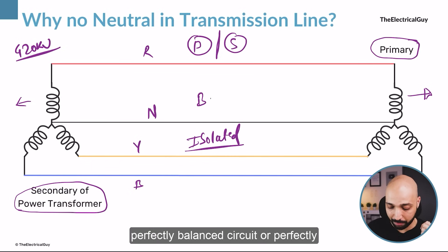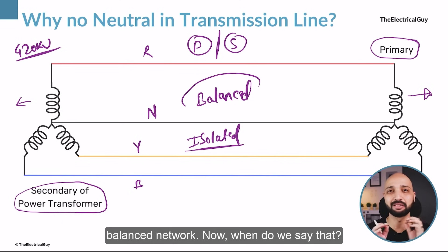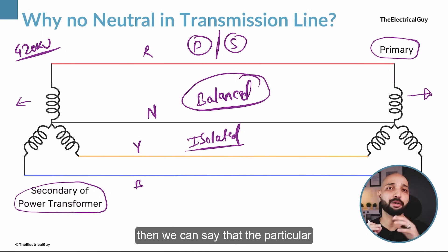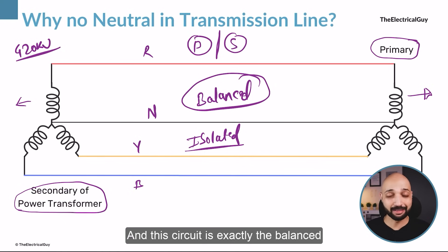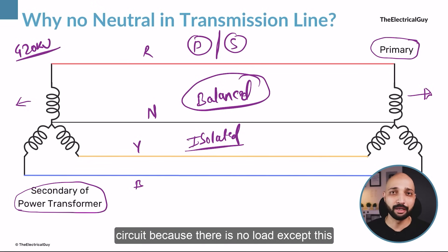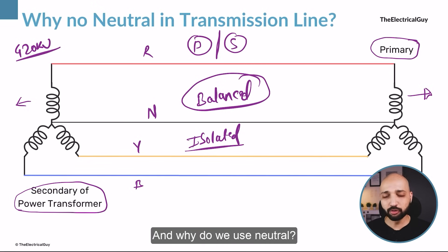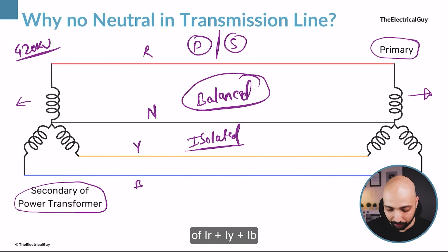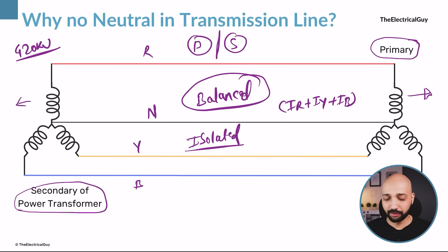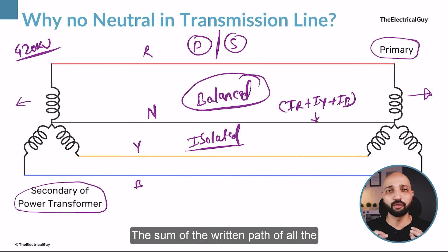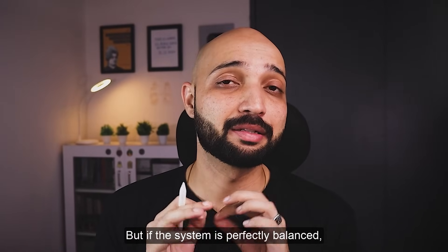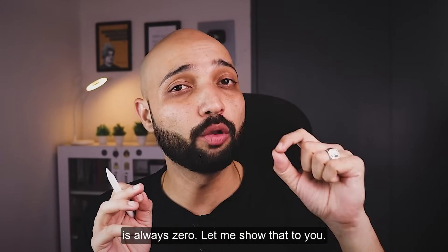We can say that this particular circuit is a perfectly balanced network. When do we say that? When the current taken by every phase is equal, the circuit is balanced. This circuit is exactly that because there is no load except the line. Neutral is required where there is an imbalance — it carries the sum of IR + IY + IB. But if the system is perfectly balanced, the current flowing through the neutral is always 0.